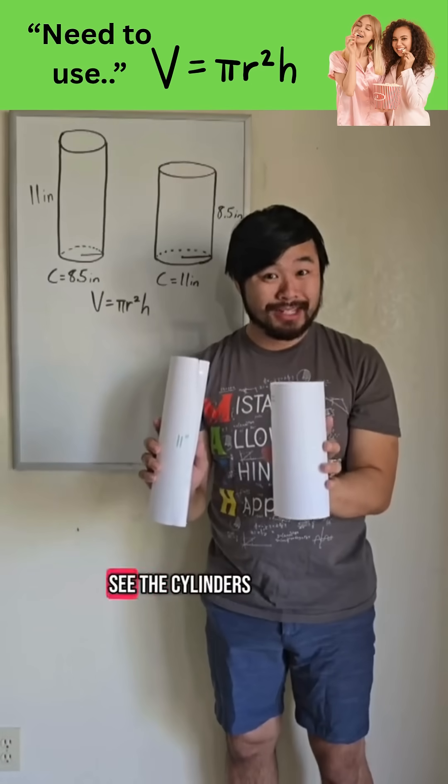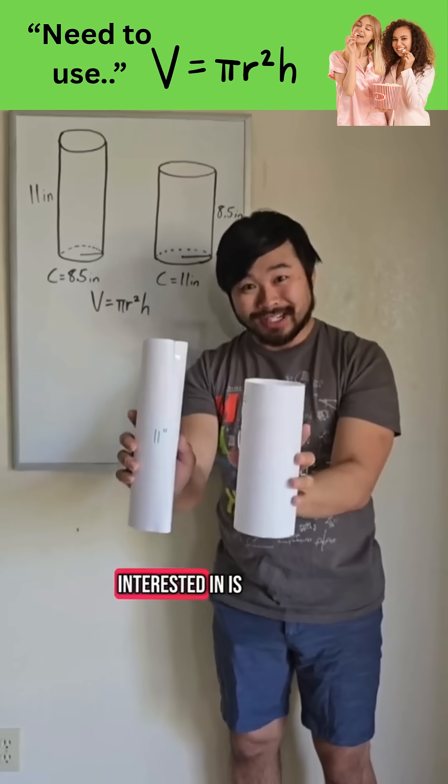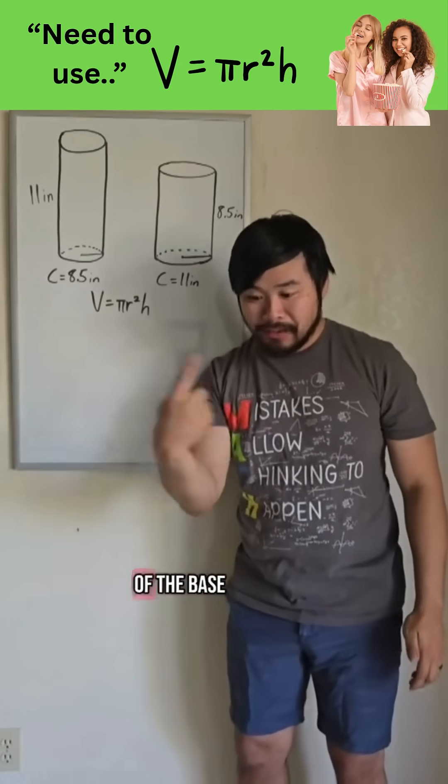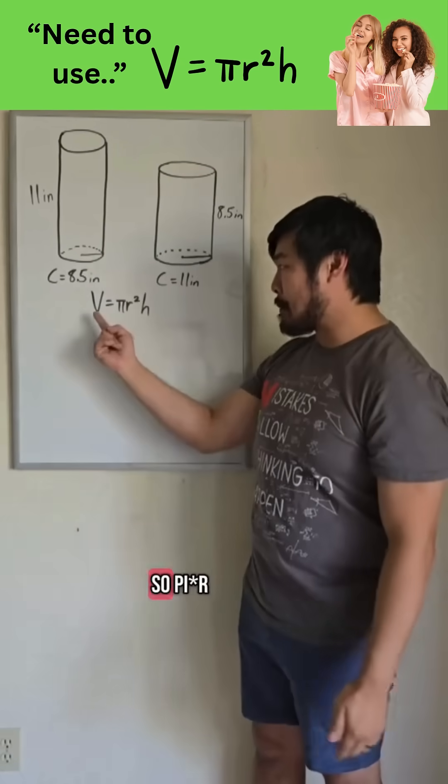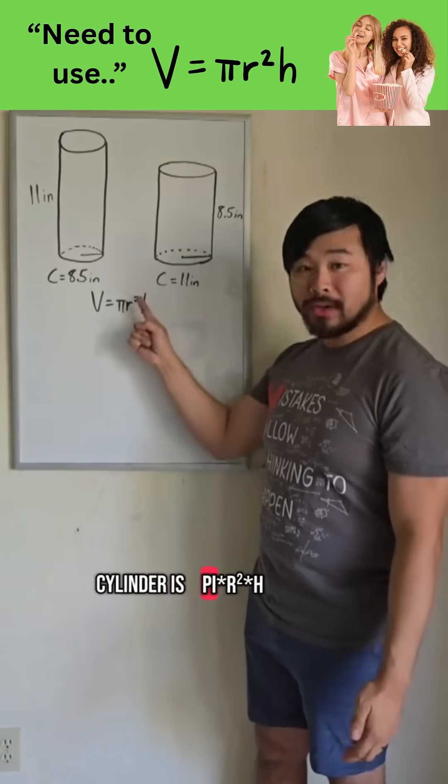Now just in case you want to see the cylinders side by side, here's what they look like. Now what we're interested in is the volume of each of these cylinders. The volume formula of a cylinder is area of the base times the height. Area of the base being area formula of a circle, so pi r squared. So the volume formula of a cylinder is pi r squared times the height.